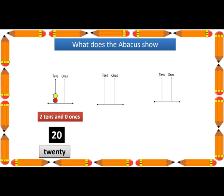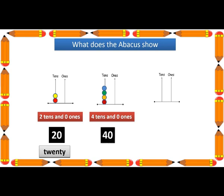Now look at the second abacus. There is no bead in the one's rod, so we have zero ones. Zero means nothing. But in the tens rod we have one, two, three, four — four beads. Four beads means four tens and zero ones. Four tens and zero ones make forty.